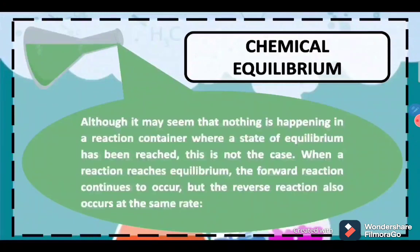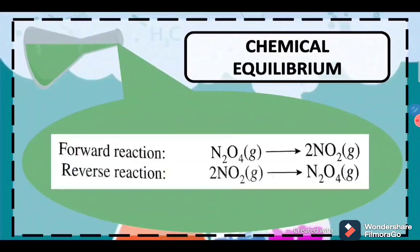Although it may seem that nothing is happening in a reaction container where a state of equilibrium has been reached, this is not the case. When a reaction reaches equilibrium, the forward reaction continues to occur, but the reverse reaction also occurs at the same rate. So the rate of the reaction occurring on the reactant side is equal to the rate of the reaction that occurs on the product side.